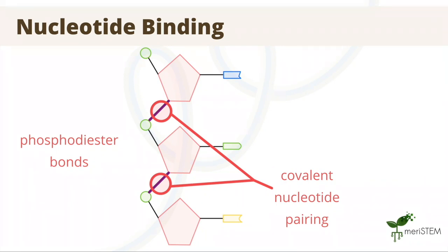As we can see, the covalent bonds form the backbone, which is made up of alternating sugar and phosphate molecules. The bonds within this backbone, including those inside the nucleotide, are called phosphodiester bonds.